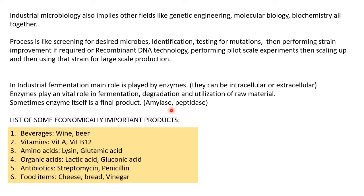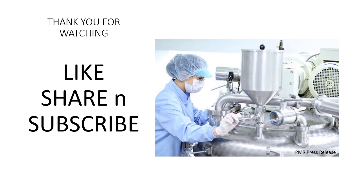Some examples of economically important products: for beverages — wine and beer; for vitamins — vitamin A and vitamin B12; amino acids like lysine and glutamic acid; organic acids like lactic acid and gluconic acid; antibiotics like streptomycin and penicillin; and food items like cheese, bread, and vinegar. These are useful points to list if you get a short-note or three-to-four mark exam question on industrial microbiology.